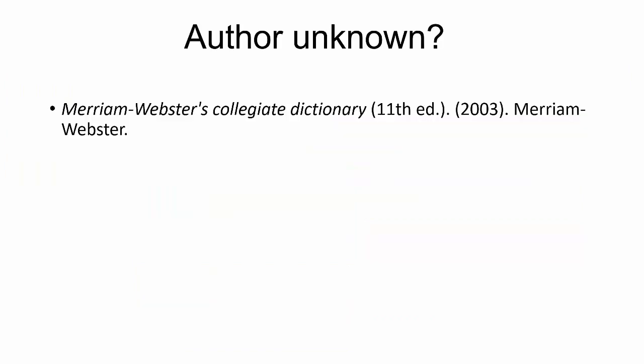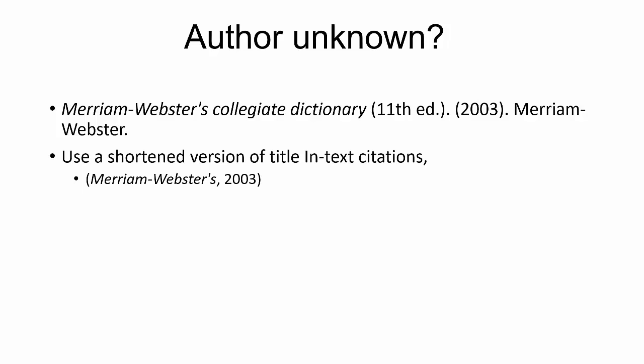If you have a book with no author, you should move the title of the book before the date. If it is an edition besides the first, that also goes before the date. The in-text citation should be a shortened version of the title. In our example, the full title is Merriam-Webster's Collegiate Dictionary, so the shortened title used in-text would be Merriam-Webster's.